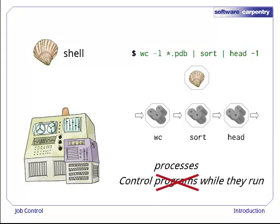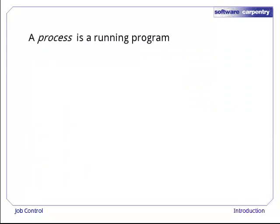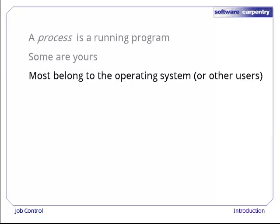What we really mean by that is how to control processes. A process is just a running program. Some of the processes on your computer are yours — they're running programs you explicitly asked for, like your web browser. Many others belong to the operating system that manages your computer for you, or, if you're on a shared machine, to other users.